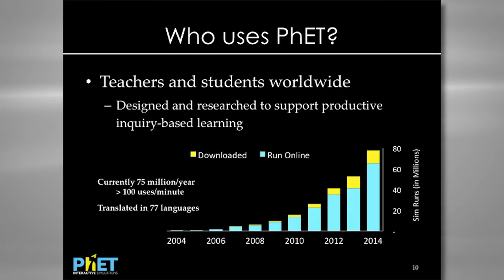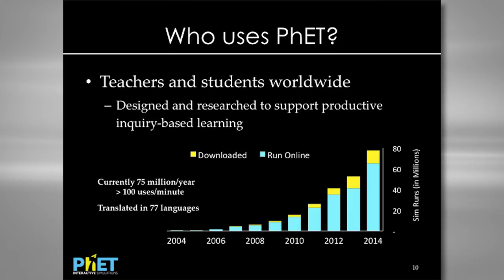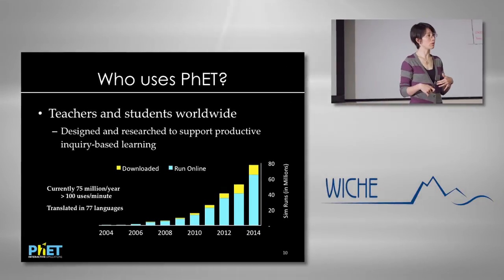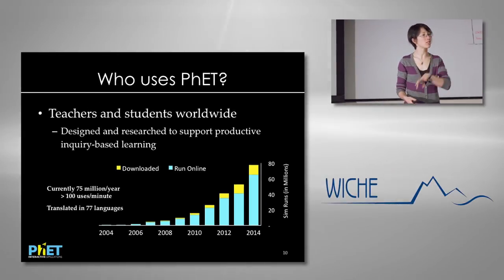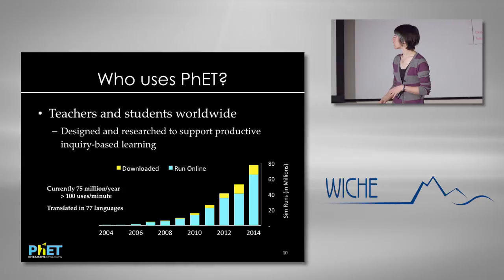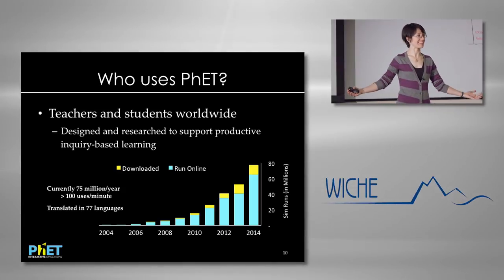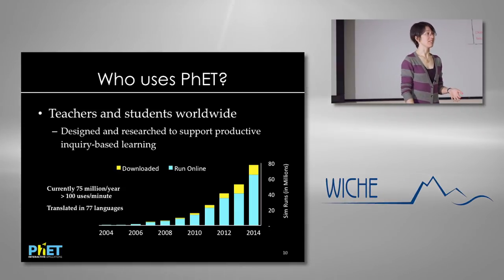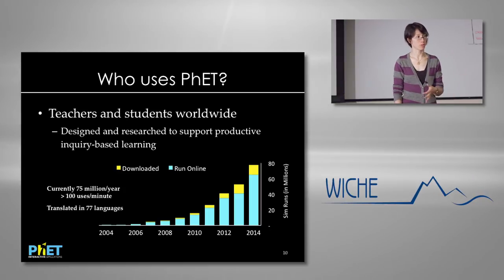PhET is used pretty much worldwide, even though the majority of users are still in the US. They're used by teachers in classrooms but also by students on their own when looking up resources. At this point we're at essentially about 75 million uses a year — and that's only the ones we're able to track. If someone's downloaded it to their hard drive we can't track it. That's over a hundred uses a minute, and we're translated by volunteers into now 77 languages.